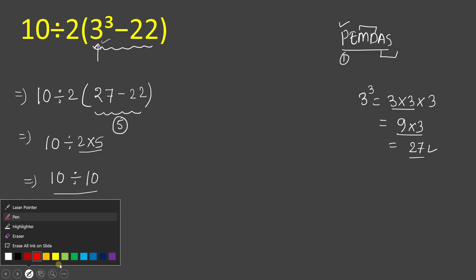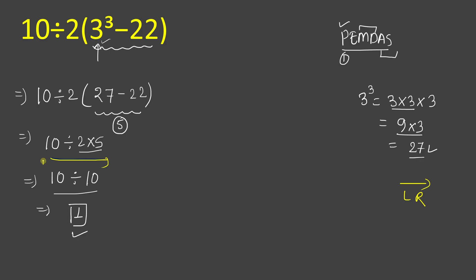As you can see there is multiplication and division operation and both have the same priority. In that case we have to solve left to right, not right to left. So first we have to solve this division which is 10 divided by 2, and this will give result of 5.